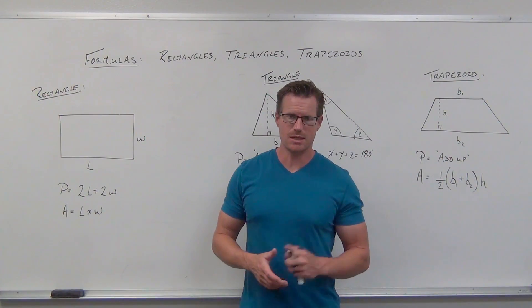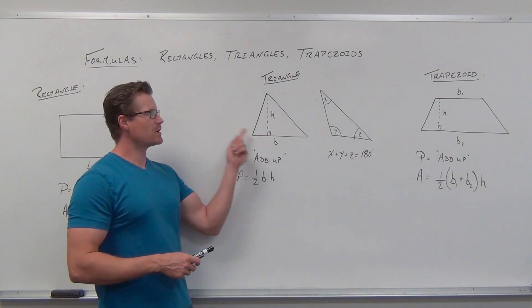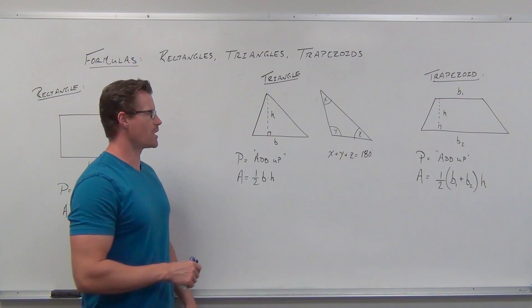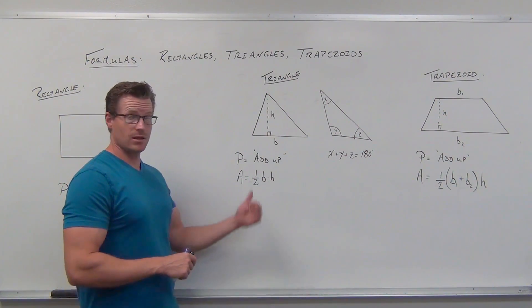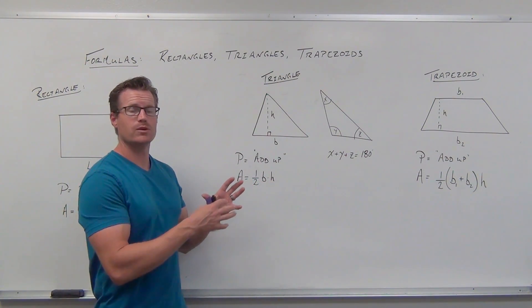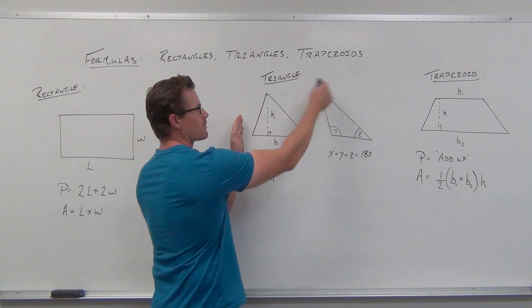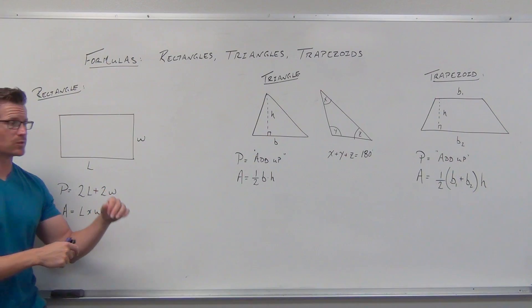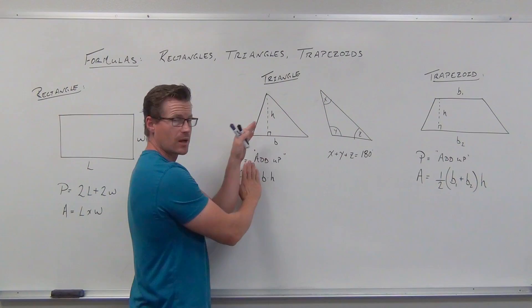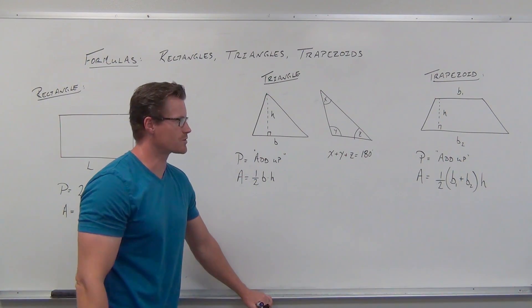Something similar happens with triangles. For perimeter, you just add up all the sides if given. Most of the time we talk about area for triangles. The area looks similar to length times width, but we cut it in half. That's because a triangle is really half of a parallelogram, which has the same formula as rectangles. So we take base times height and divide by 2: A = (1/2)bh, because every triangle is half of some parallelogram.